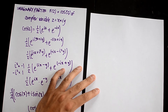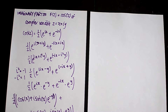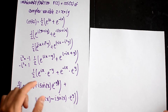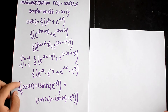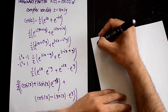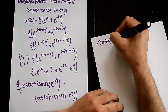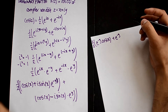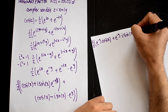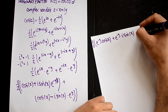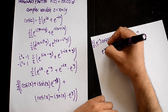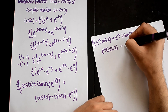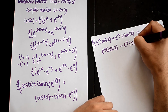I'm going to do this the long-winded way because the first time someone showed me this, they skipped steps and I was lost. So multiplying e^(-y) in and keeping the half separate, you get: e^(-y) cos x plus e^(-y) i sin x, plus e^(y) cos x minus e^(y) i sin x.